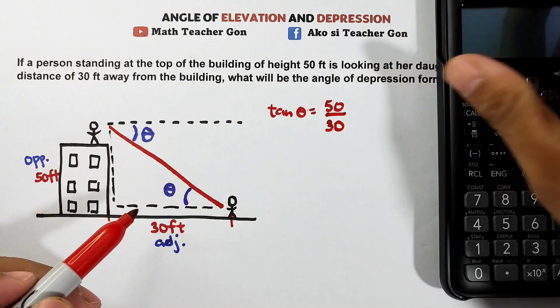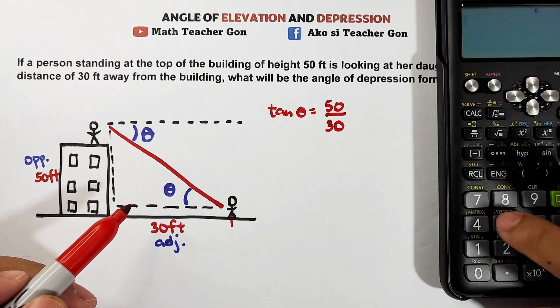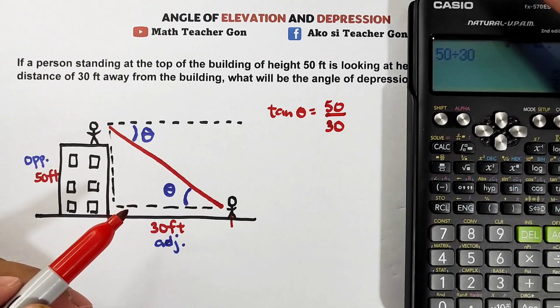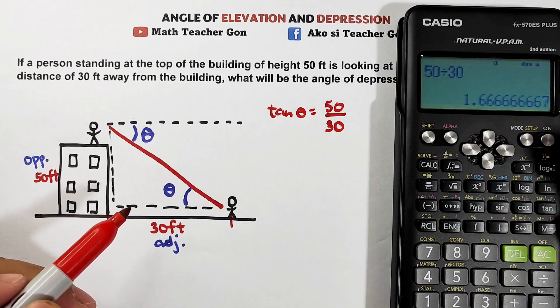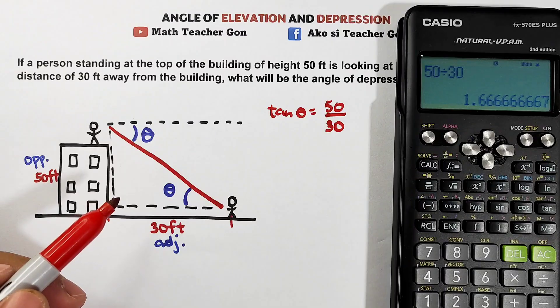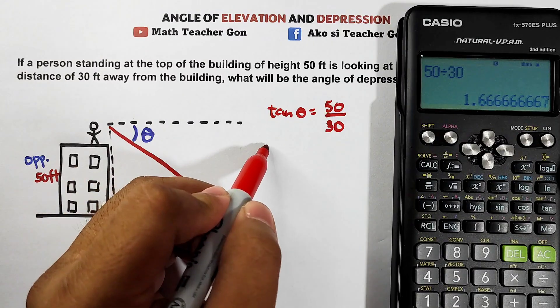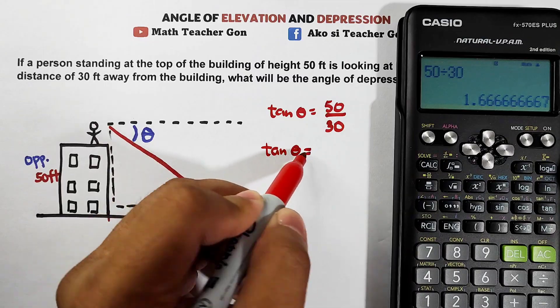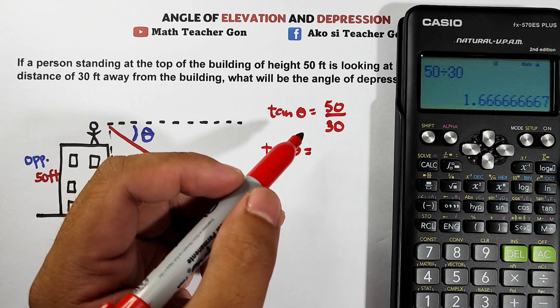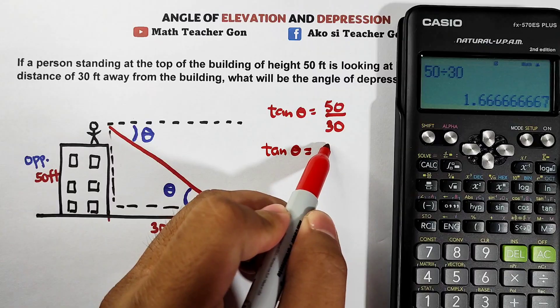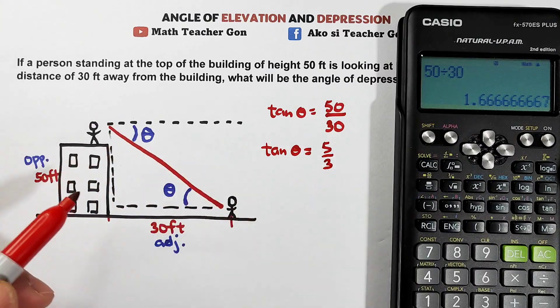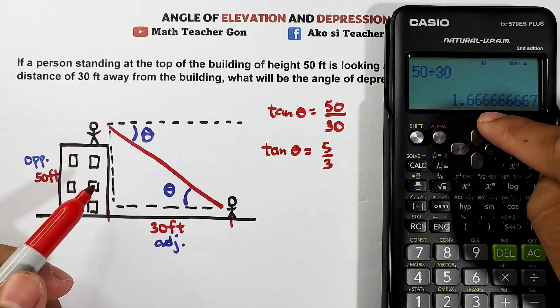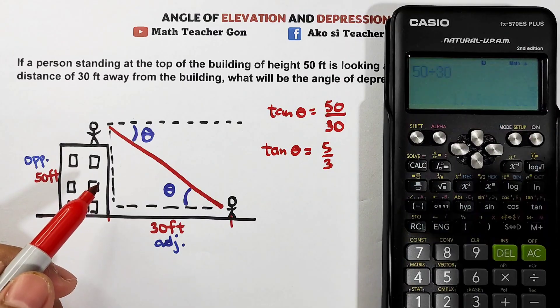Let's solve this. 50 divided by 30 equals 5 over 3. Or in decimal is 1.67. So we have tangent theta equals 50 over 30 or 5 over 3. Actually, I can show you another way here so we don't round off. Because when we round off here, what happens is it's only approximate. Let's do this.